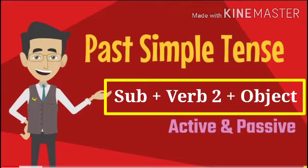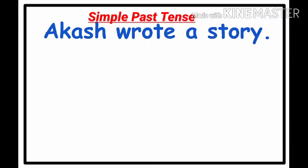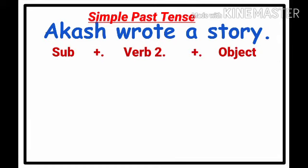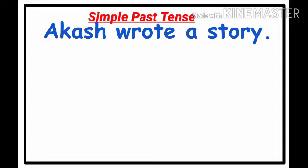Let's take the example of Akash. 'Akash wrote a story.' Here 'wrote' is the second form of the verb, so we write: subject plus V2 plus object. Observe that there is no direct helping verb used in an affirmative sentence. Now let us see how to make it passive.